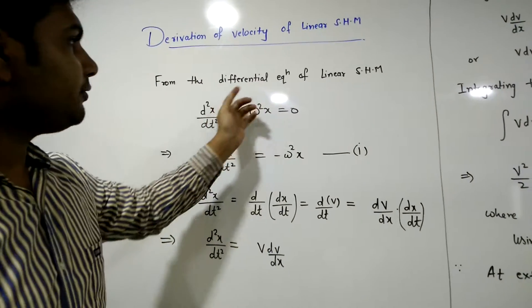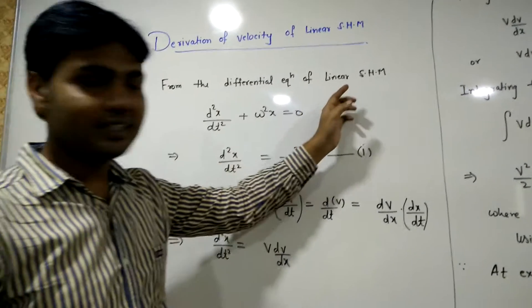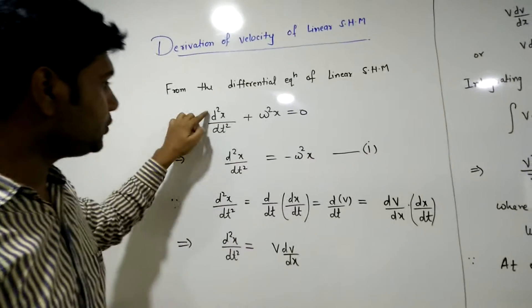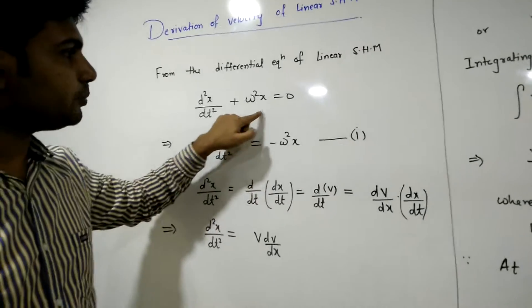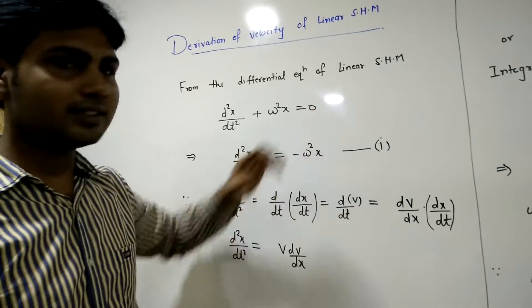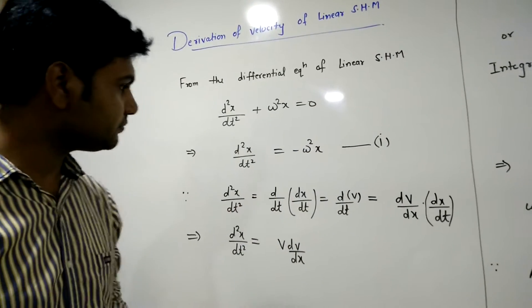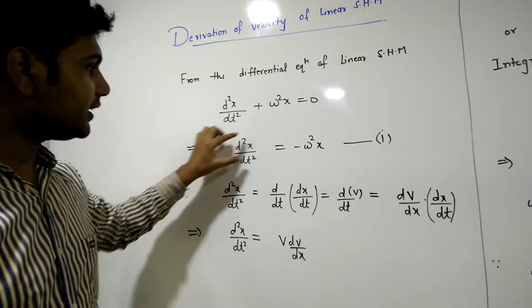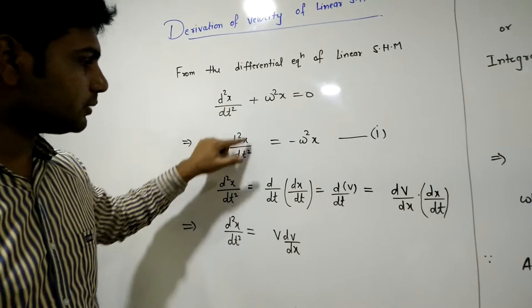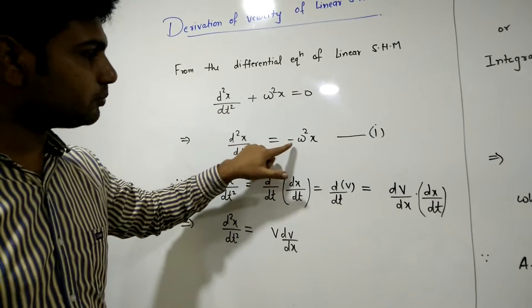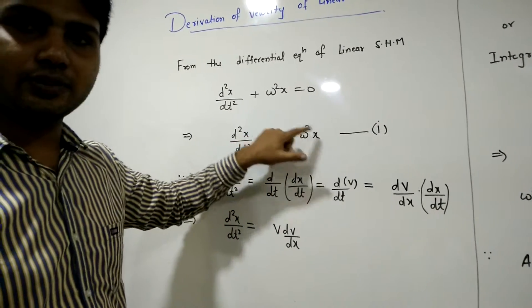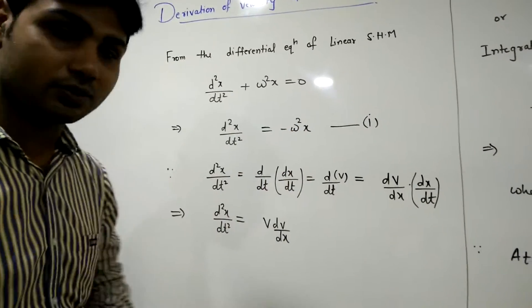As we know, the differential equation of linear SHM is d²x/dt² + ω²x = 0. Or we can write this expression as d²x/dt² = -ω²x.